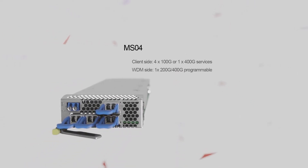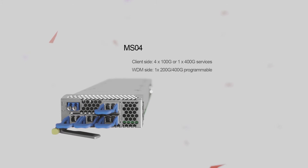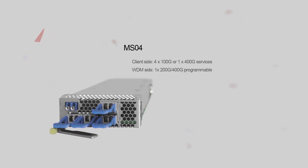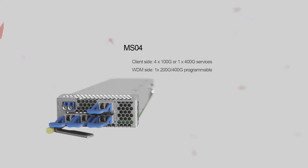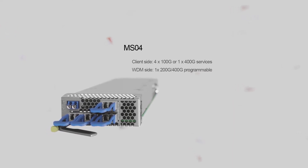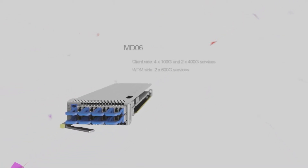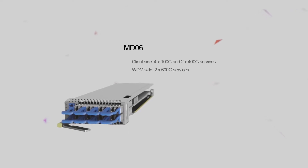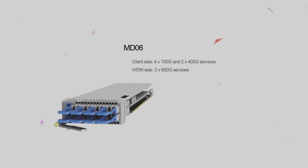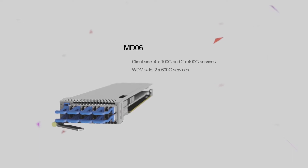The MD-02a supports client-side 100 gigabit. The MD-03a supports client-side 100 gigabit services with WDM-side programmable 200 or 400 gigabit. The MD-06 supports client-side 100 gigabit to 400 gigabit services, with WDM-side up to 600 gigabit services.